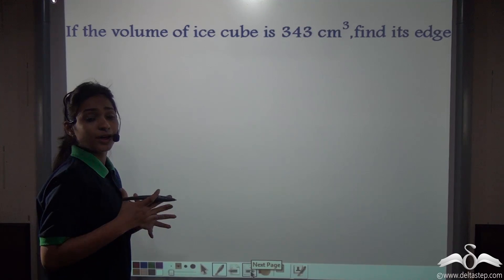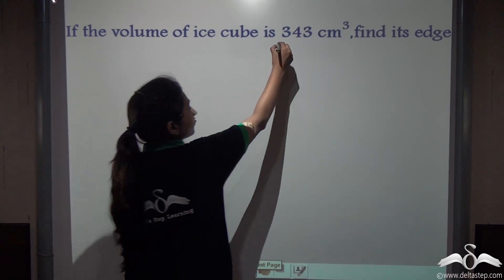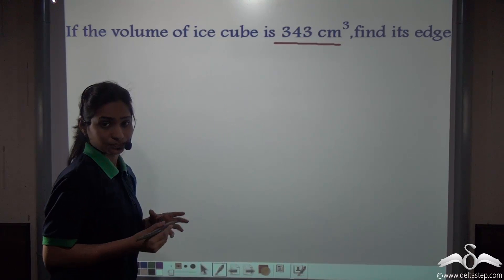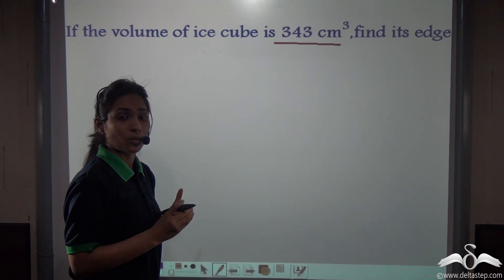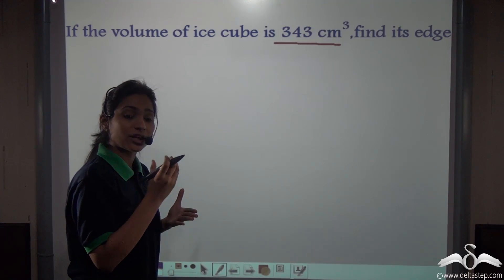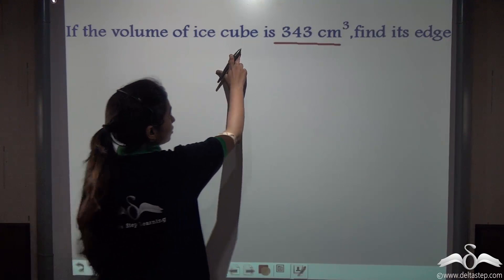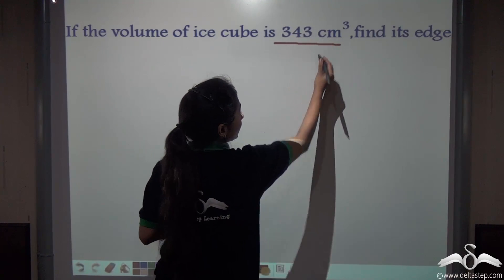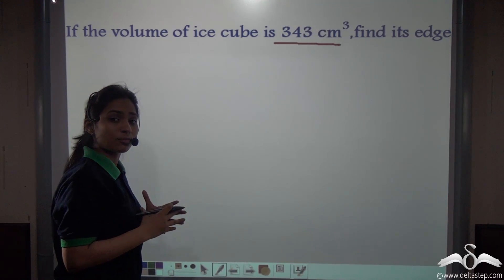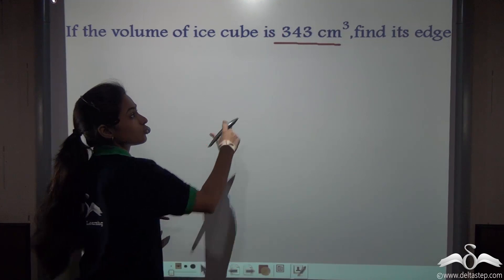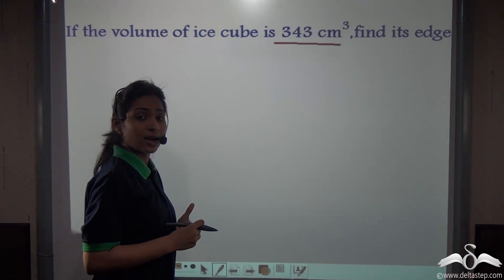Now suppose I already know that the volume of a cube is 343 centimetre cubed. If I know the volume, can I use the volume formula to find the edge of that cube? Let us take the example of our ice cube. If I knew from before that the volume of the ice cube is 343 centimetre cubed, can you help me find the edge of that ice cube?